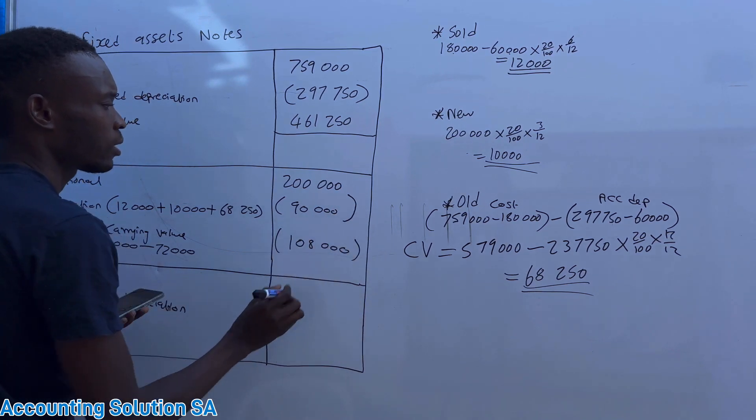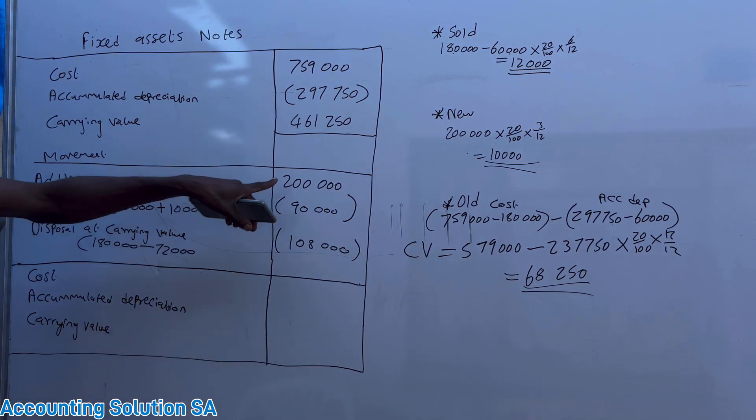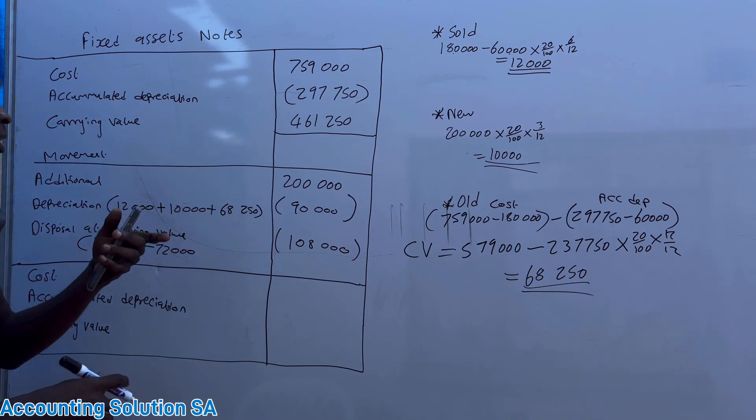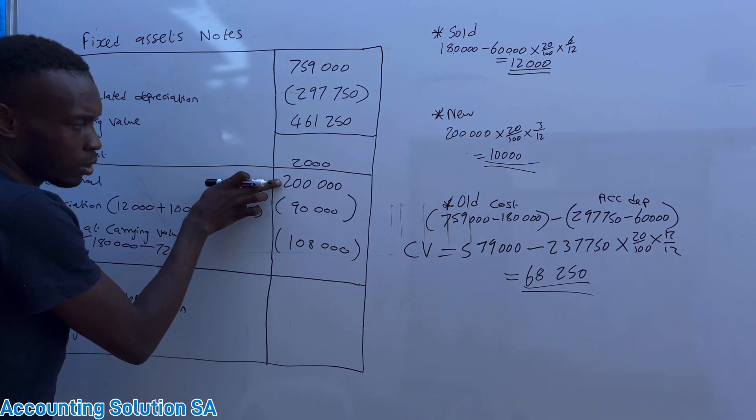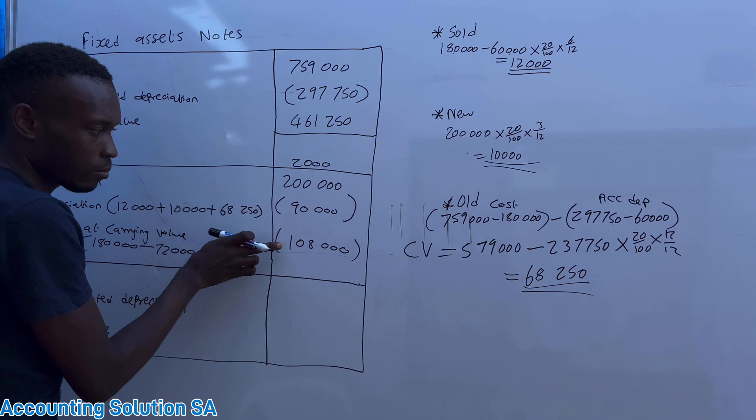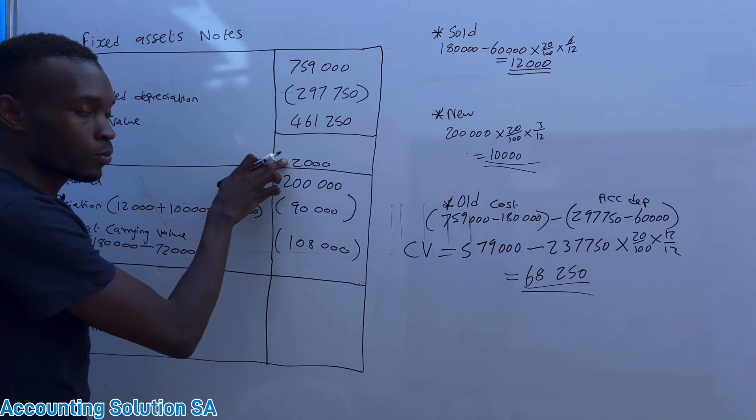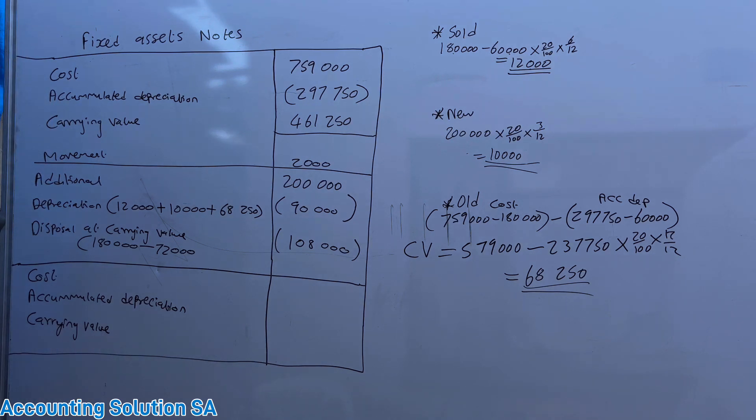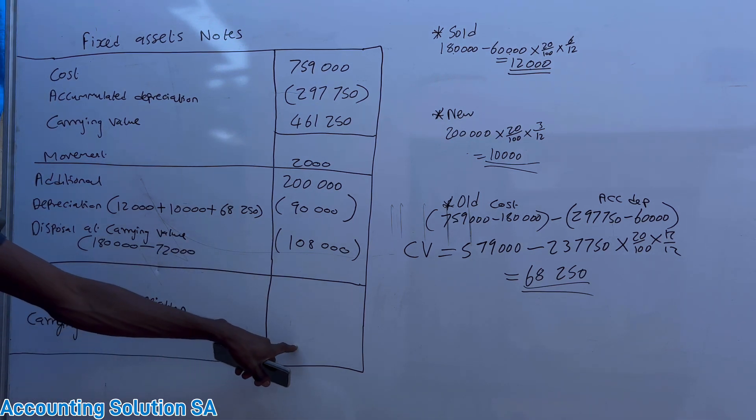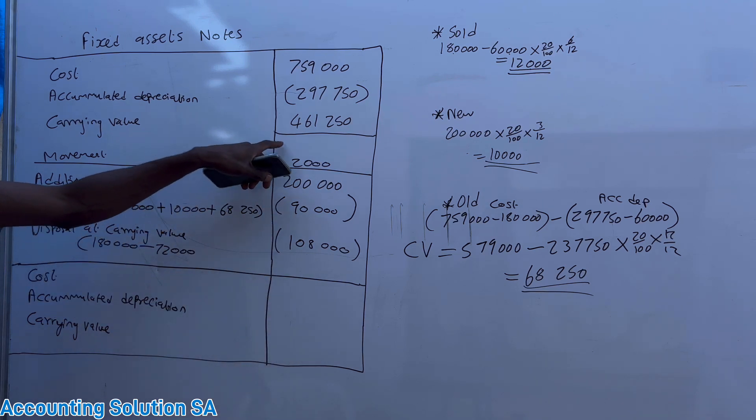Amount of 90,000, so if you calculate this movement you are going to get 2,000. How do we calculate movement? 200,000 minus 90 minus 108, then it's gonna give you 2,000.